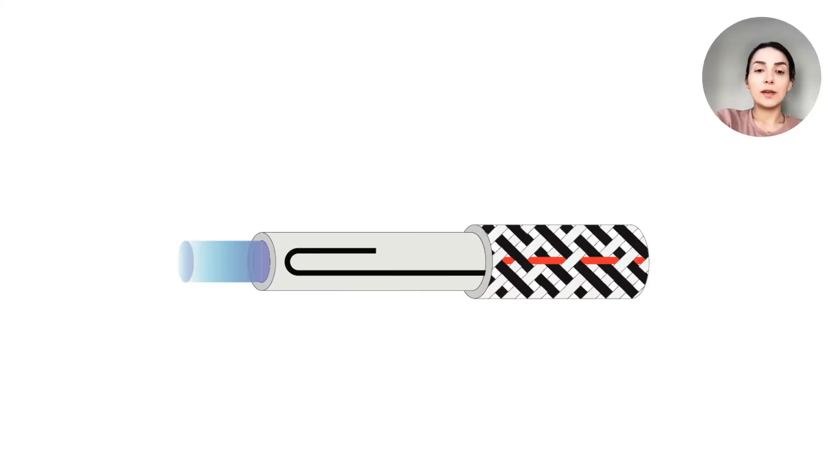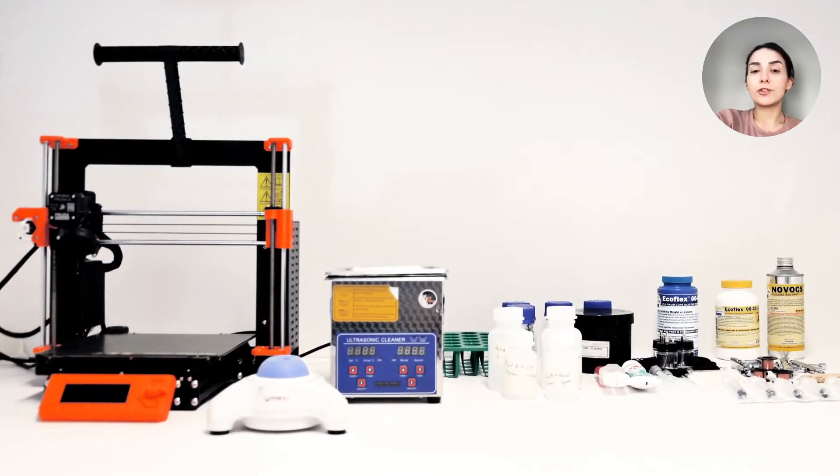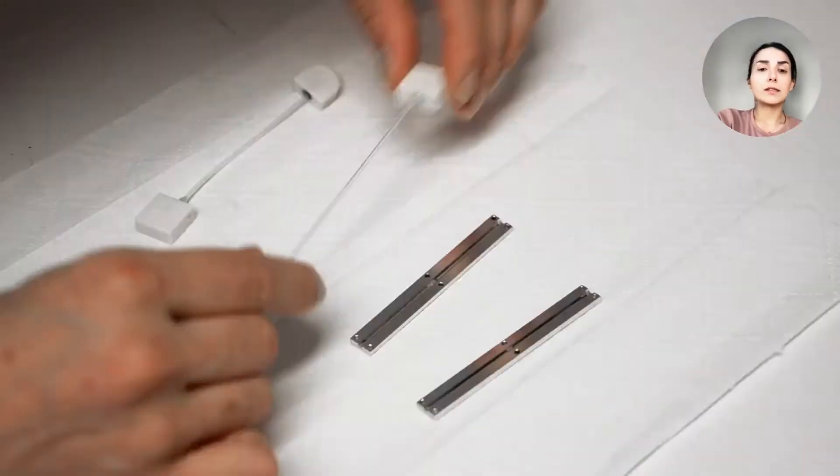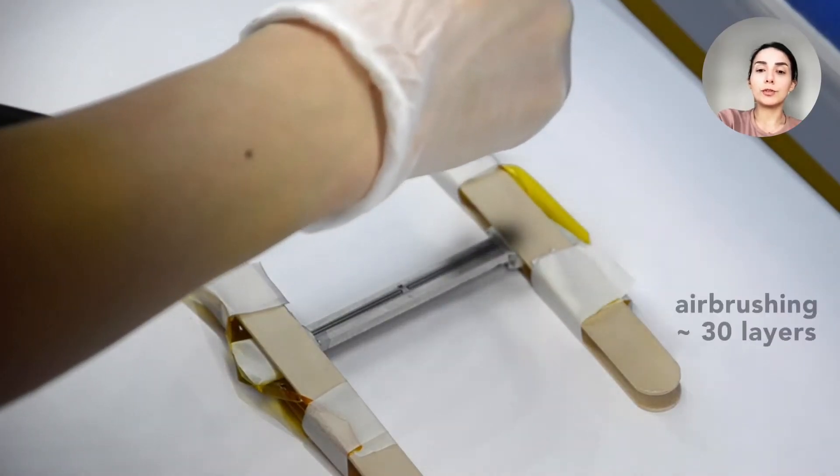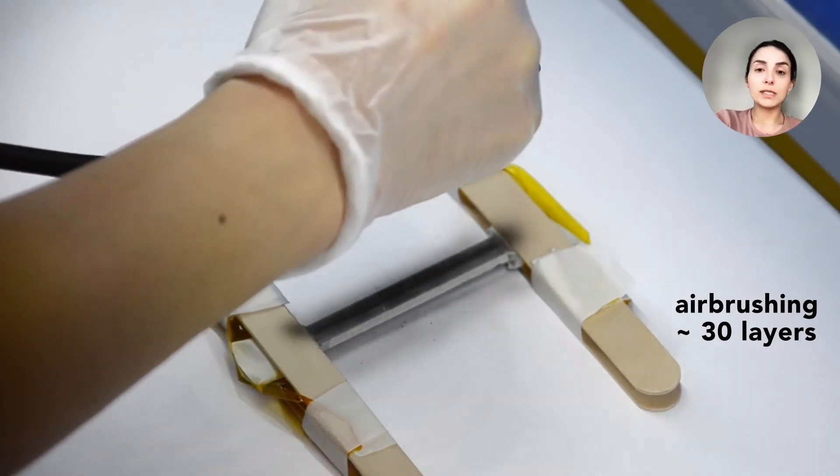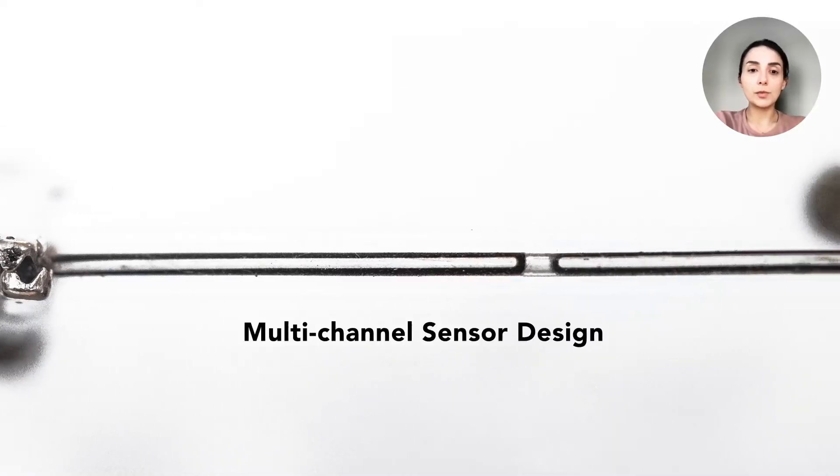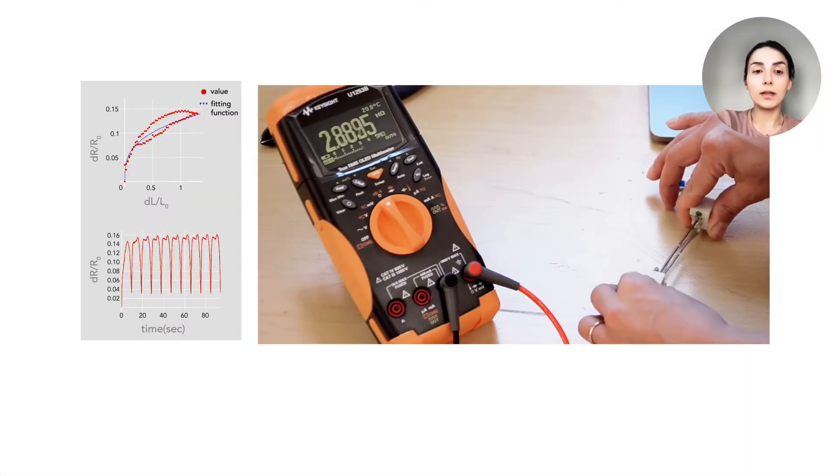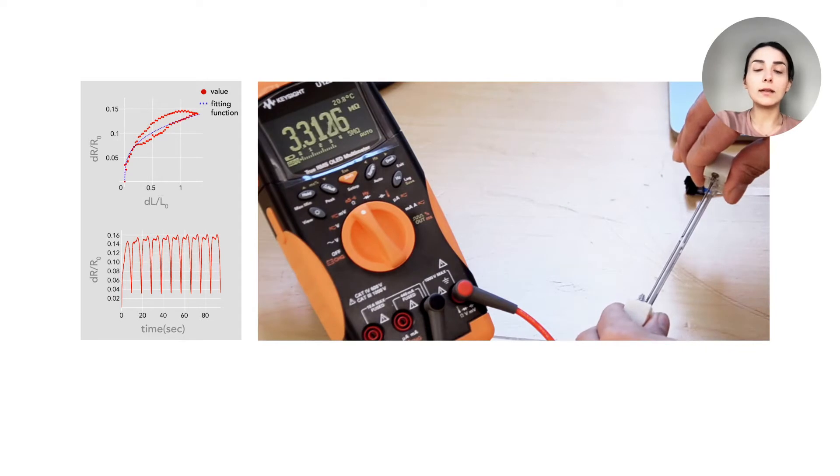The first step in our fabrication pipeline is the center layer. This employs a spray deposition method of a carbon black elastomer composite to pattern resistive strain gauges on a microtubular structure. We engineer the conductive solution to be sprayable onto an elastomeric substrate and adhere to it while maintaining the resistance profile with little hysteresis at high strains.